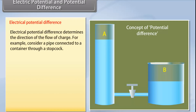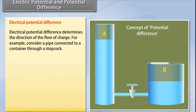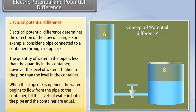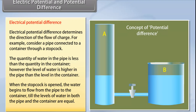Electrical potential difference determines the direction of the flow of charge. For example, consider a pipe connected to a container through a stop cork. The quantity of water in the pipe is less than the quantity in the container. However, the level of water is higher in the pipe than the level in the container. When the stop cork is opened, the water begins to flow from the pipe to the container until the levels of water in both the pipe and container are equal. This determines that it is not the quantity of water but the level of water which decides the direction of flow. It is the potential difference that is responsible for the flow of water.